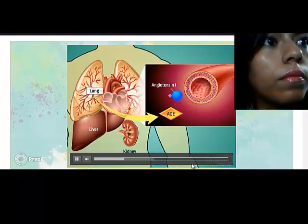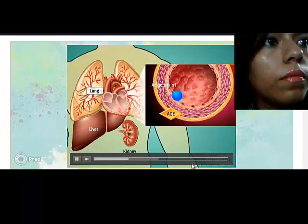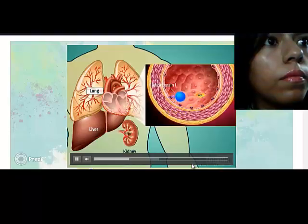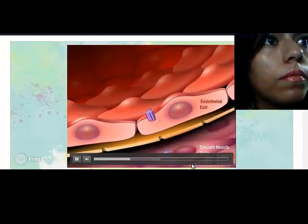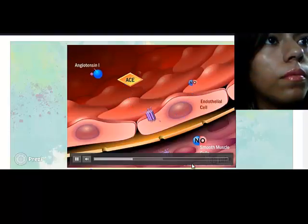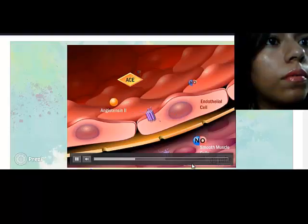However, ACE is also produced in the vascular endothelium of many tissues, including the kidney, adrenal gland, brain, and heart. The angiotensin-converting enzyme converts the inactive precursor angiotensin-1 into the vasoactive peptide angiotensin-2.